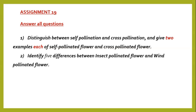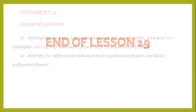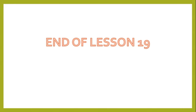For assignment 19, answer all the questions. Number one: distinguish between self-pollination and cross-pollination, and give two examples each of self-pollinated and cross-pollinated flowers. Number two: identify five differences between insect-pollinated flowers and wind-pollinated flowers using a table. I wish you the best. I hope to see you next week. This lesson will soon be uploaded, so check by the close of this weekend. Till we meet again. Bye-bye!